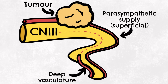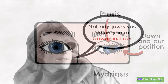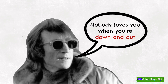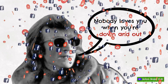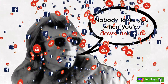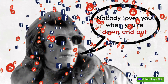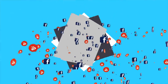So that pretty much sums up everything about the oculomotor nerve palsy. We often use little ploys to help us remember complicated topics, and an old teacher of mine once told me to remember the effects of the third nerve palsy by quoting John Lennon with, 'nobody loves you when you're down and out.' When in doubt, remember that with the oculomotor nerve gone, the other nerves are working unopposed.